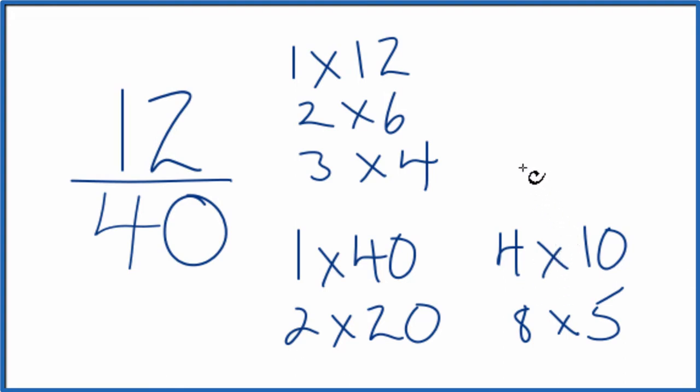We want to find the greatest common factor, something that goes into 12 and 40. So I see that I have 4 here. That's the greatest common factor that's going to go into both 12 and 40.